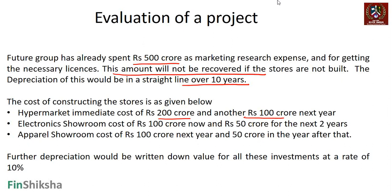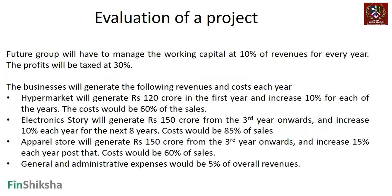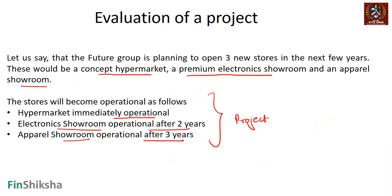Construction costs are: hypermarket — 200 crore immediately plus 100 crore in the next year; electronics showroom — 100 crore now plus 550 crore over the next two years; apparel showroom — 100 crore next year and 50 crore the year after. We can create a timeline to understand this in detail. In the next section, we will construct the series of earnings and cash flows and evaluate the project using multiple methods, including a concept called economic value added (EVA).